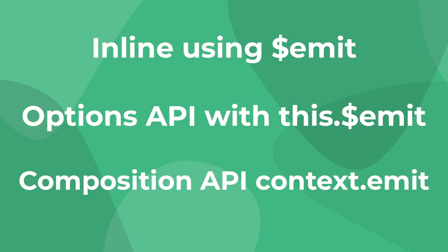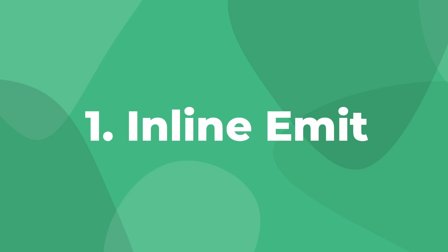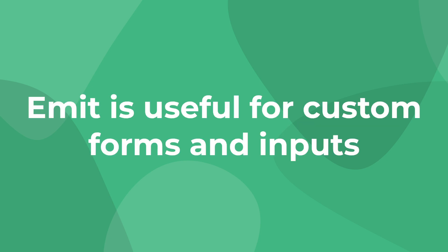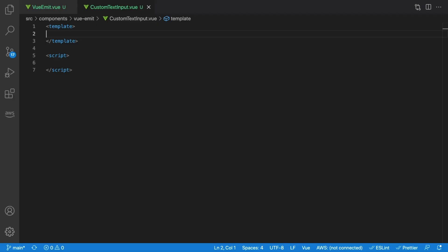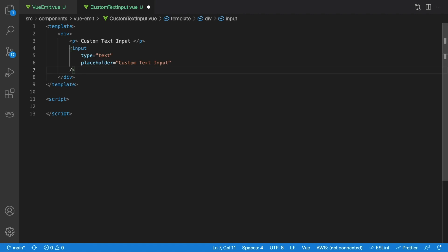Each of them has their own pros and cons depending on your use case, so let's check out an example in all three and then you can determine which one works best for you. First, emitting inline events in Vue. An example of where you might want to send data out of a component is when building your own custom form input. Let's imagine a custom text input — here we have a div, a paragraph, and then the actual input text that our custom text input is wrapping around.